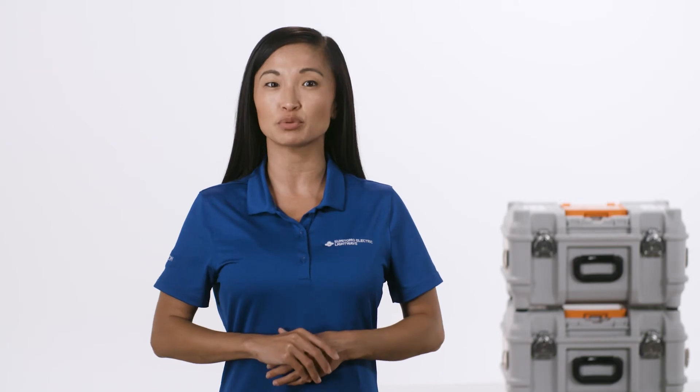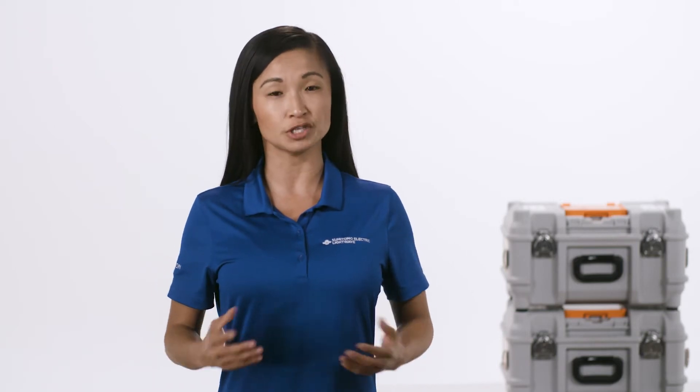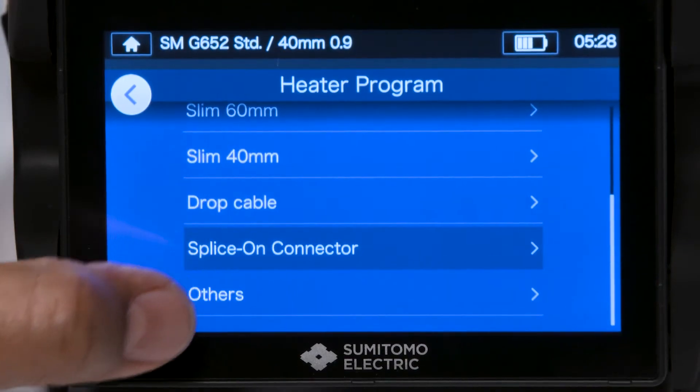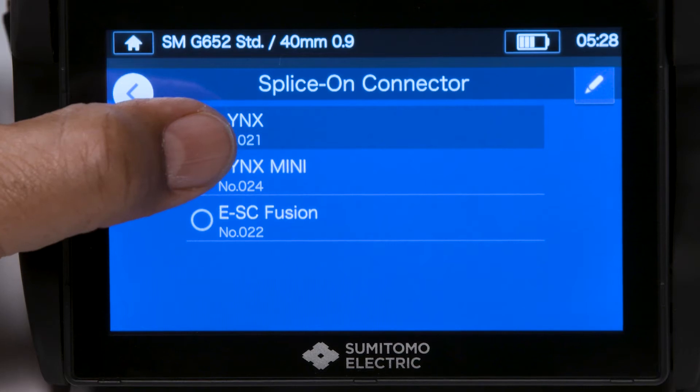Be sure to perform the pre-fusion splice steps. Clean splicer, set splice and heat programs. To change the heater program, locate and select the correct protective sleeve setting.